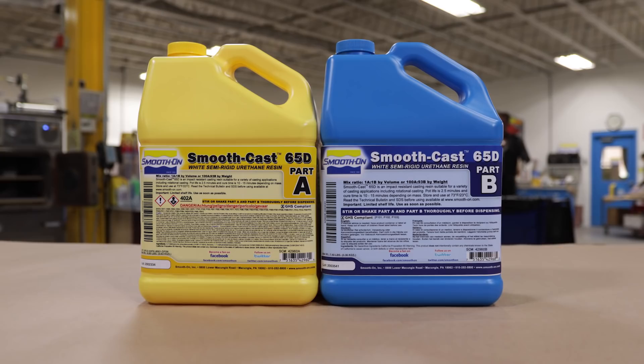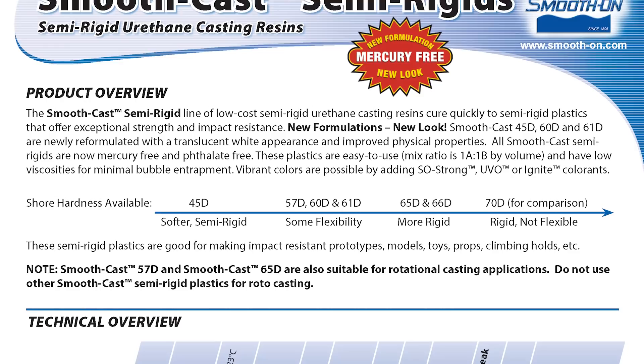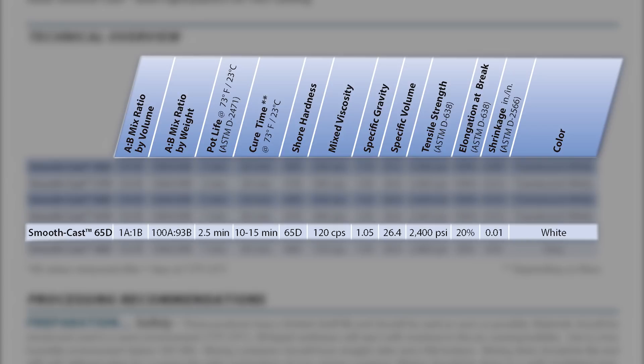Now the casting material we're using is the SmoothCast 65D. This is a one-to-one mix ratio by volume, so no gram scale is necessary. We can just dispense equal amounts and it has a work time of two and a half minutes with a full cure of 10 to 15 minutes under normal conditions at room temperature. For this part, we're using relatively little material and we will let it cure for at least 40 minutes at room temperature.